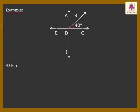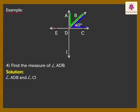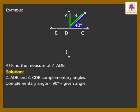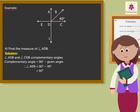Question 4: Find the measure of Angle ADB. Here, Angle ADB and Angle CDB form a pair of complementary angles. Therefore, Angle ADB is equal to 90 degrees minus 40 degrees, which is equal to 50 degrees. Hey kids! Wasn't it fun learning about different types of angles?